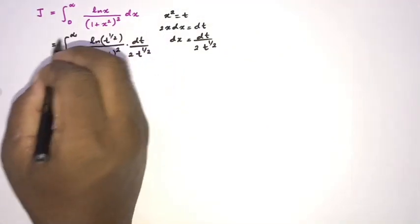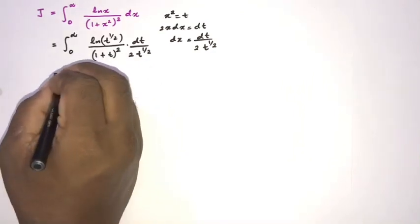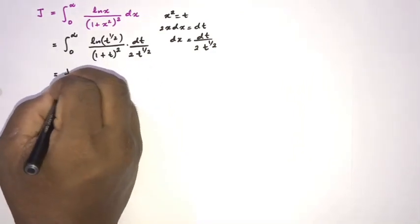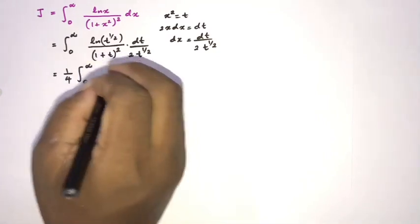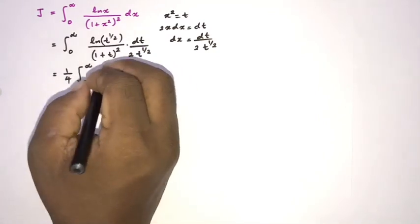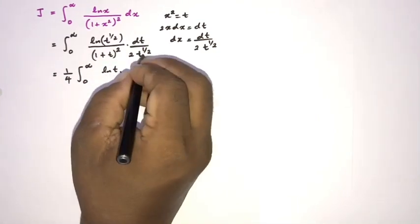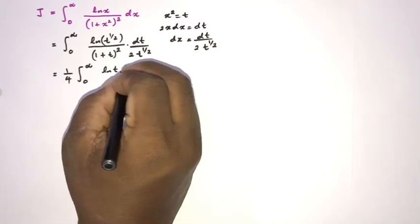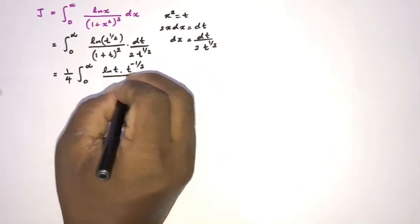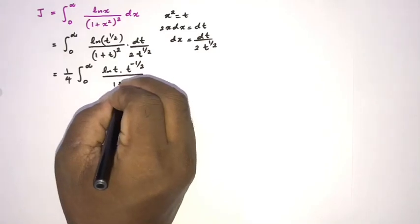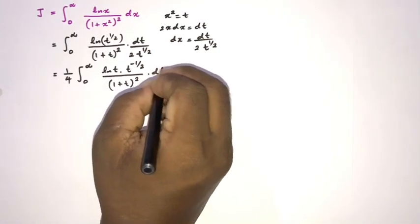By the property of natural logarithm, the one half comes outside the integral sign, and combined with the existing 1 over 2 we get 1 over 4. So we have 1 over 4 times the integral from 0 to infinity of ln(t) times t to the minus one half over (1 plus t) squared dt.